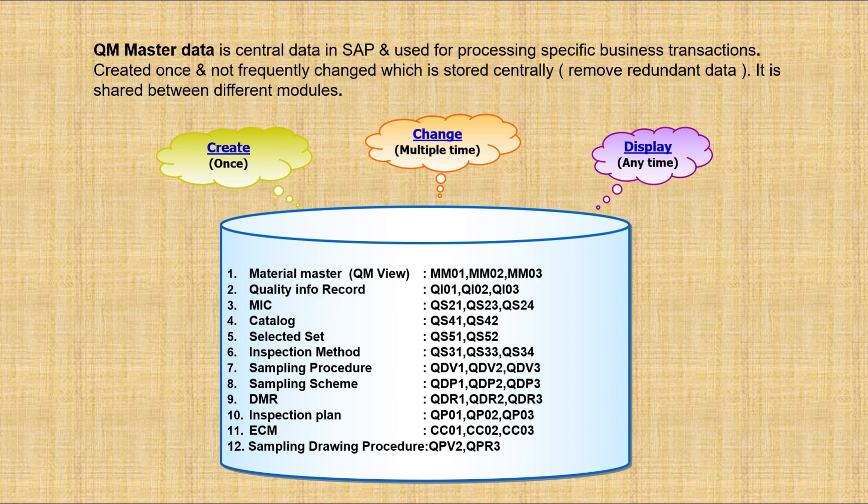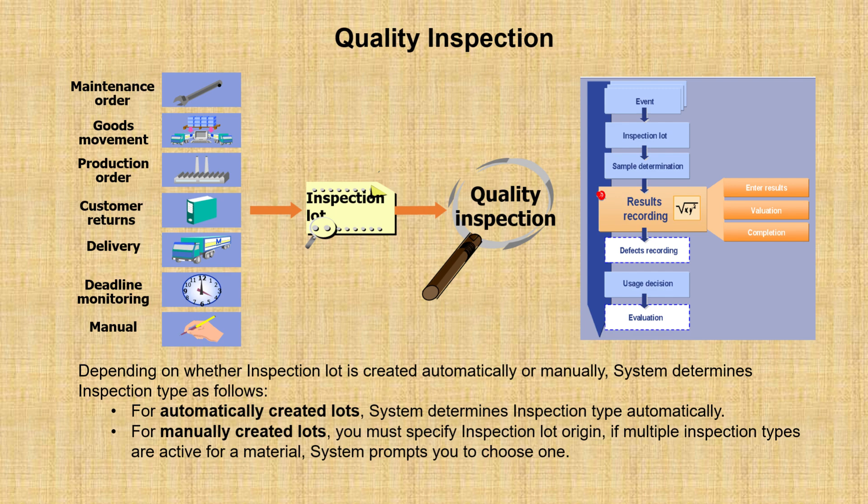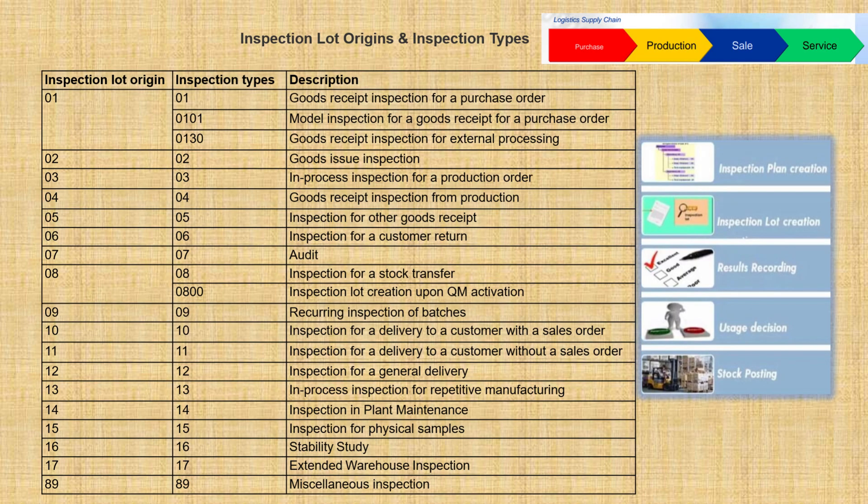After creating master data comes the execution part. In quality inspection, you decide what kind of inspection is needed — whether at the time of procurement, production, or sale, triggering the lot based on that. The inspection type — 01 for goods receipt — needs proper settings so the lot gets triggered for that particular inspection type at the correct entry point.